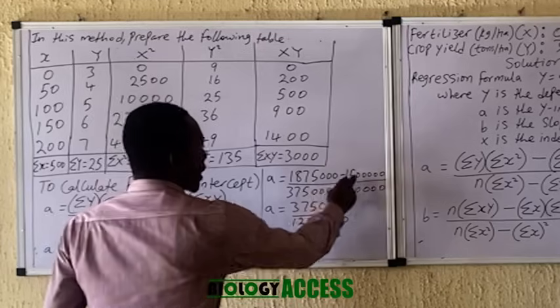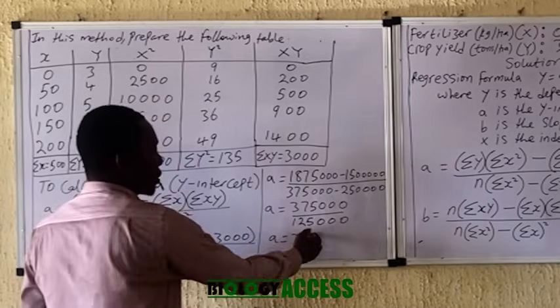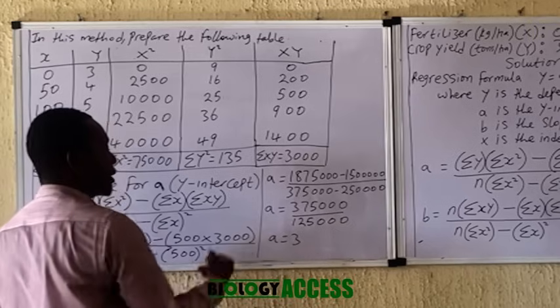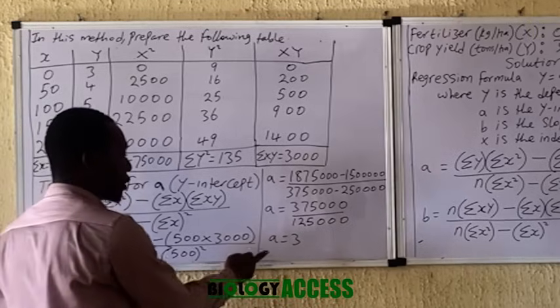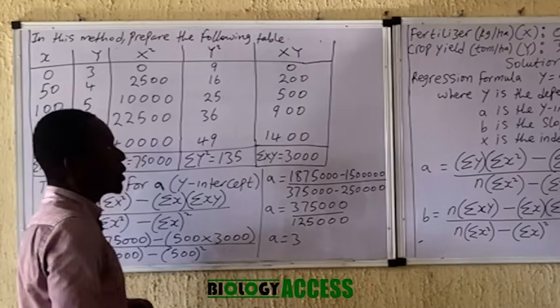Carrying out the subtractions in the numerator and denominator, your final value for A is 3.